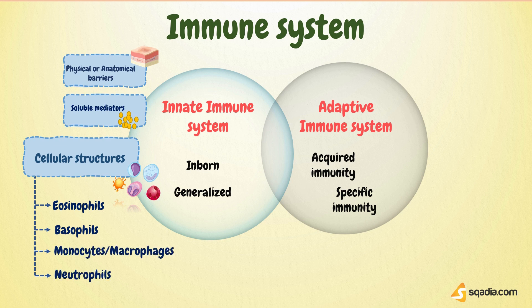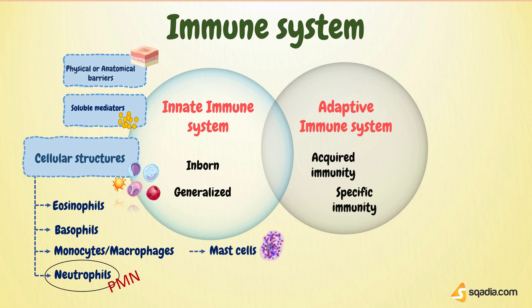A very important white blood cell type of the innate immune system is the neutrophil, which is also called a polymorphonuclear leukocyte. About 80% of all neutrophils are actually in the bone marrow, and they can be mobilized after infection to enter the bloodstream and then travel to the infected area. Other than these neutrophils, mast cells and dendritic cells also play vital roles in innate immunity.